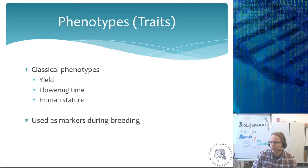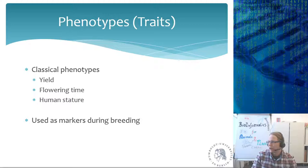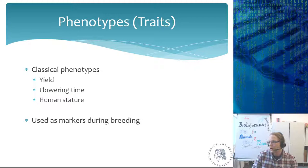Very classical phenotypes are things like yield — how much yield we get from a certain plant — and flowering time, which can be defined as the period from seed to germination and then from germination to flowering. Other well-studied classical phenotypes include human stature, height, and BMI.